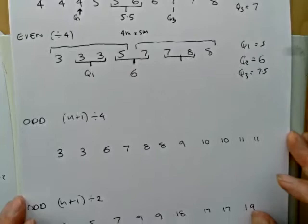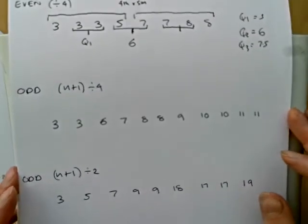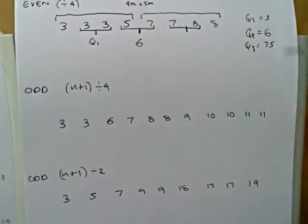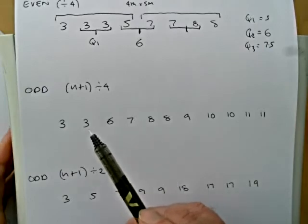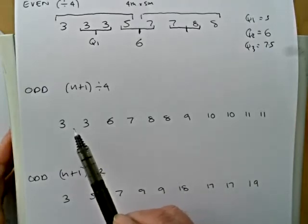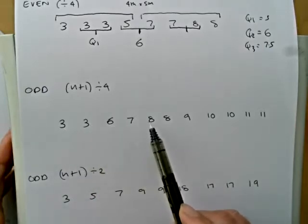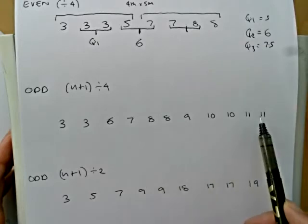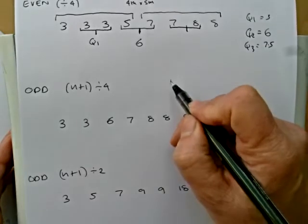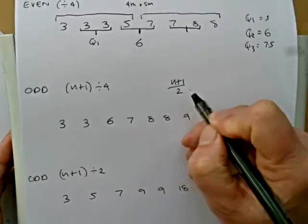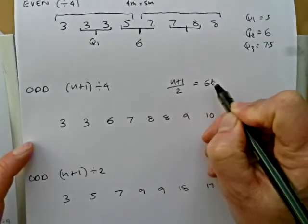Now if we move on to odd numbers, it's in the same way there's a difference if we have n plus 1 divided by 4, and n plus 1 divides by 2. So we'll look at the first set of numbers. We've got 11 numbers here: 1, 2, 3, 4, 5, 6, 7, 8, 9, 10, 11. So for the median, it's n plus 1 divided by 2, which will give me the sixth number.